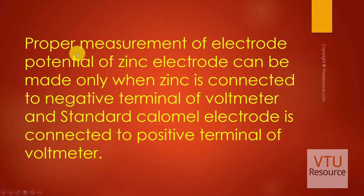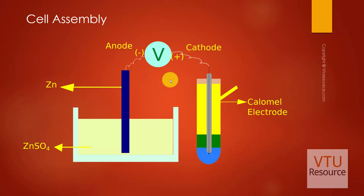Proper measurement of the electrode potential of the zinc electrode can be made only when zinc is connected to the negative terminal of the voltmeter and the standard Calomel electrode is connected to the positive terminal. This is a trial-and-error method — there is no fixed rule. Initially, when the Calomel electrode was connected to the negative terminal and zinc to the positive terminal, the voltmeter showed no reading.